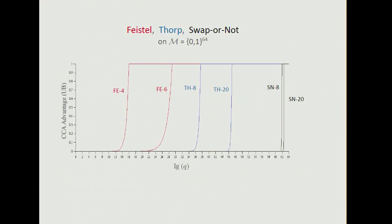So here's a plot of the best-known upper bounds on CCA advantage versus the log of the number of queries for various ciphers. Here the domain is 0, 1 to the 64. So on the left, we have 4 rounds of balanced Feistel, and then 6 rounds of balanced Feistel.